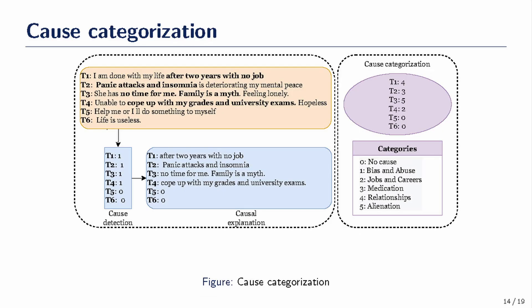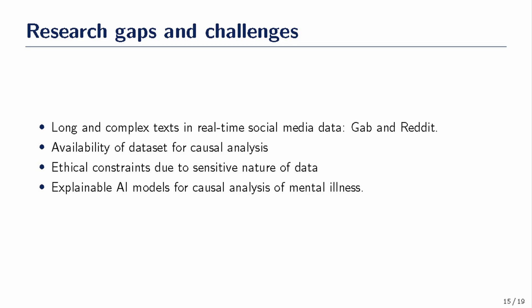To address the causes of mental health conditions, we need to categorize them. We have defined five categories: bias and abuse, jobs and career, medication, relationships, and alienation. For example, text about coping with grades and university exams maps to jobs and career, while panic attacks and insomnia map to medication, and 'two years with no job' maps to jobs and career again.